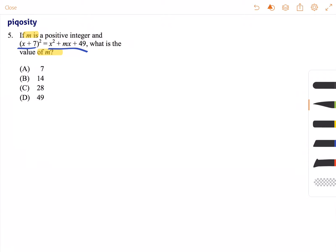So the nice thing is that this side of the equation, the x² + mx + 49, is about as simplified as it's going to get. We don't really need to do anything with it, but we can do something with the left-hand side, the (x + 7)².